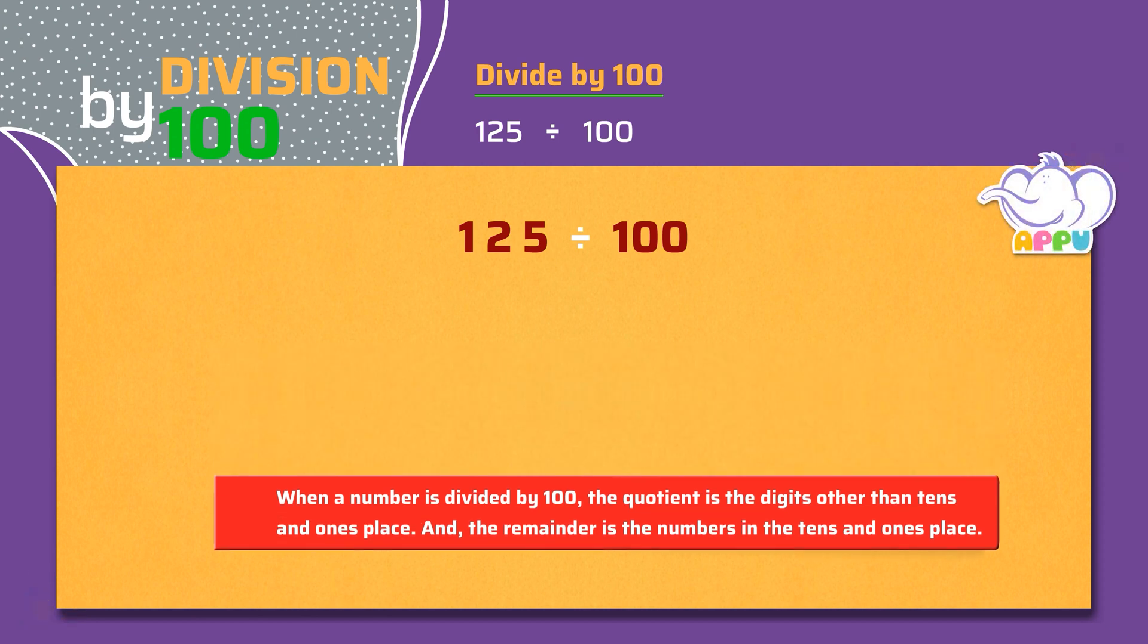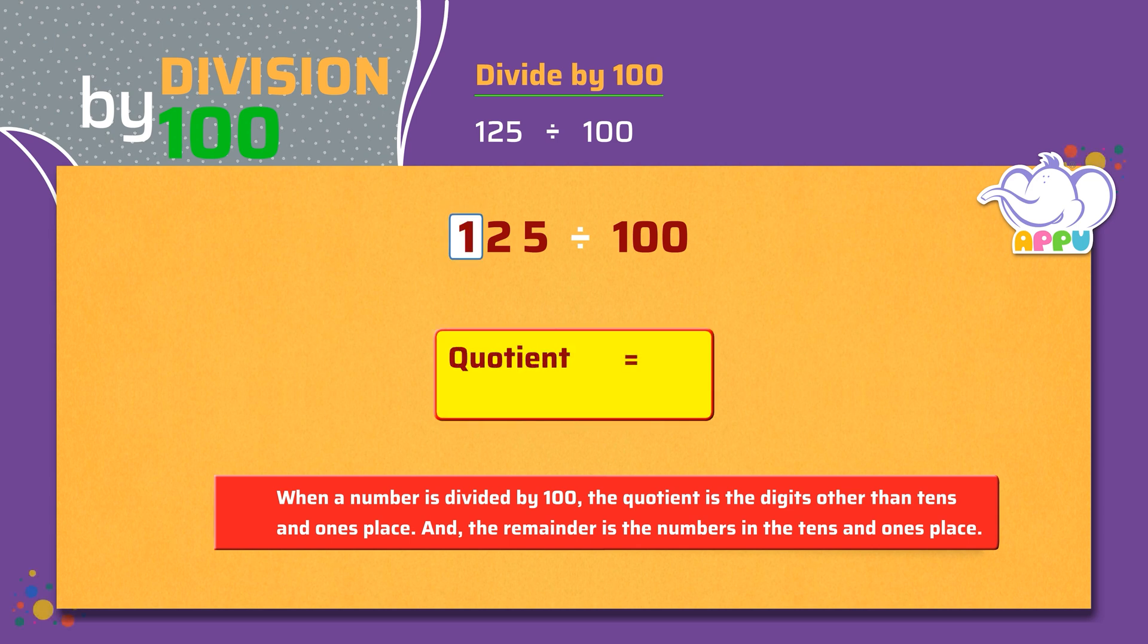The quotient is the digits other than tens and ones place. That is one. And the remainder is the last two digits of the number. That is 25.